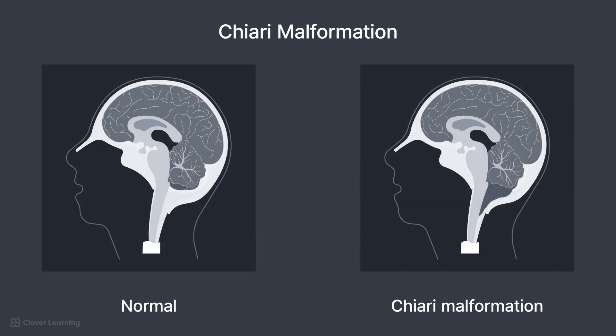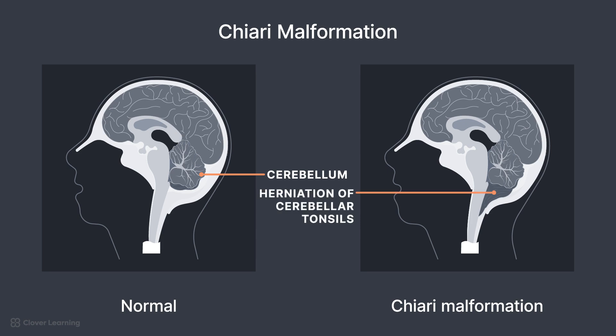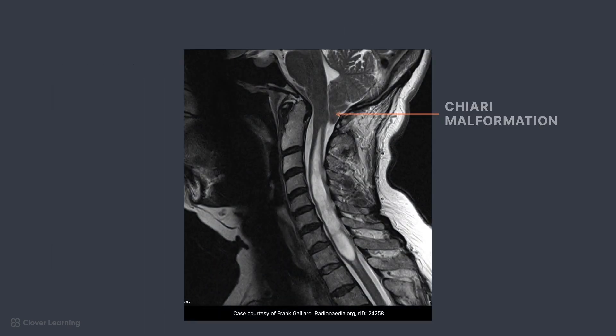A Chiari malformation is another common indication for a brain study. This particular pathology would not need gadolinium contrast. A Chiari malformation is when the lower portion of the cerebellum — the cerebellar tonsils — begin to protrude through the foramen magnum. These are graded in severity from Chiari 1 to Chiari 4. A secondary pathology resulting from a Chiari malformation is a syrinx, which is a hollow tube of CSF found in the spinal cord or brain stem. When scanning patients for a Chiari malformation, it is important to cover the entire malformation, which may result in slice coverage past the foramen magnum and affected brain tissue.